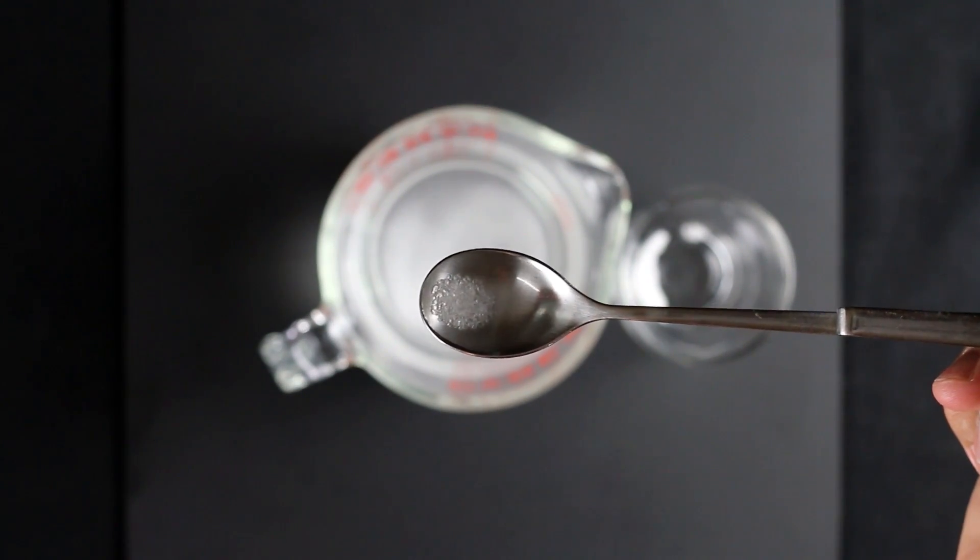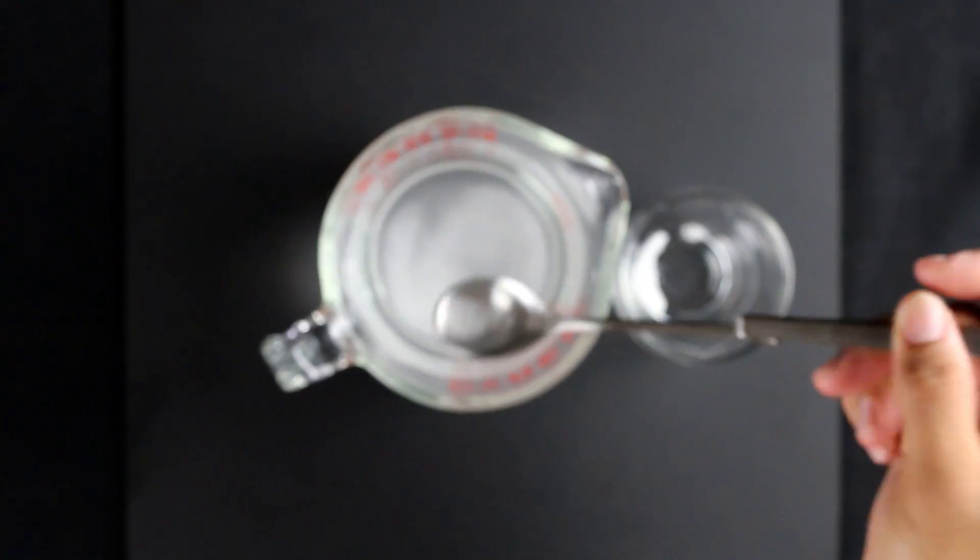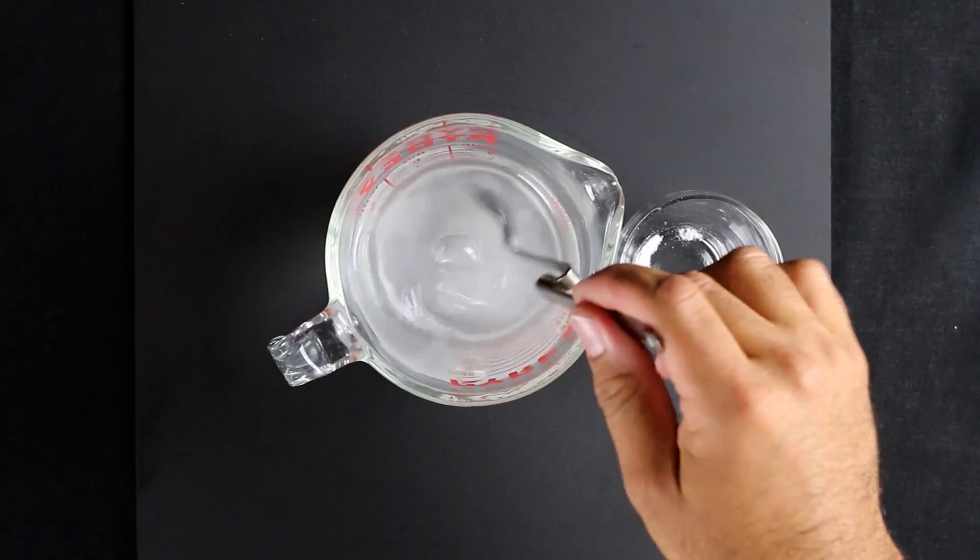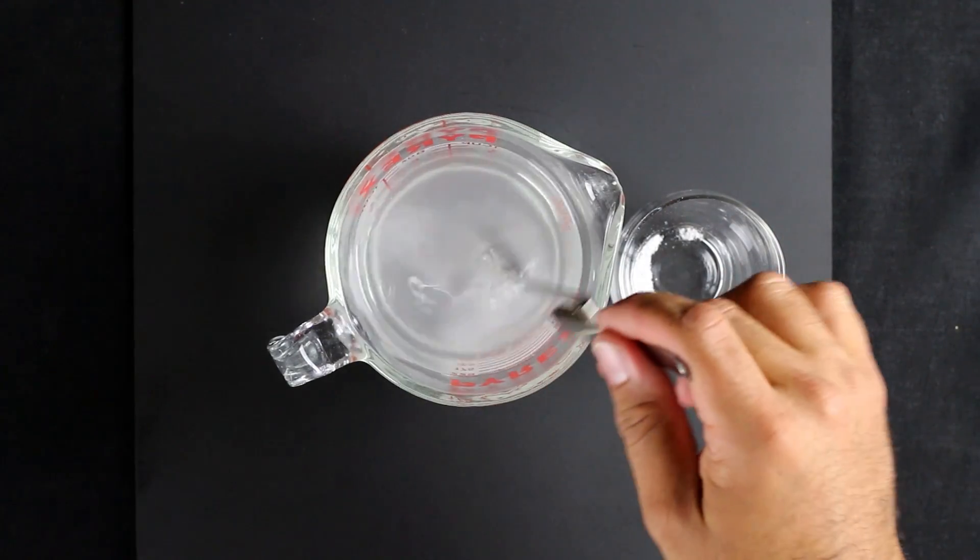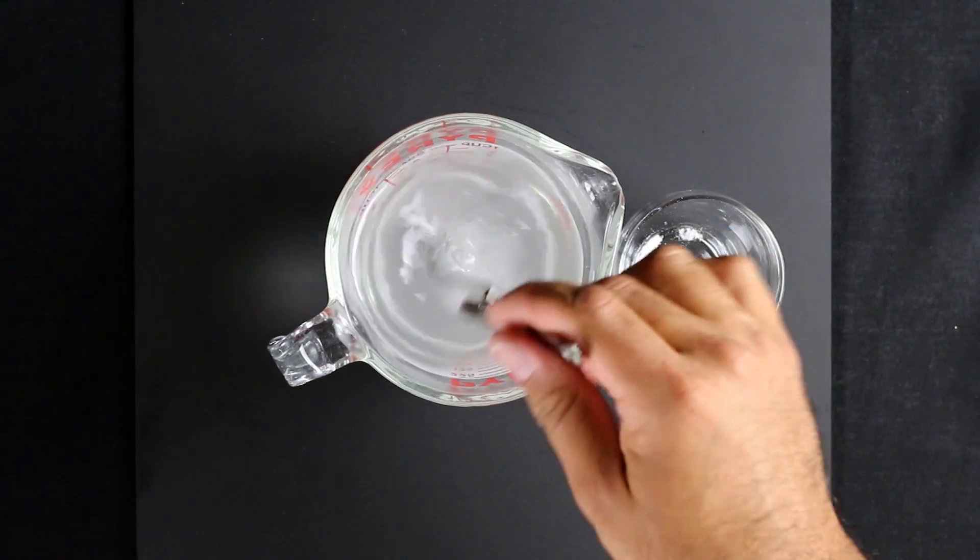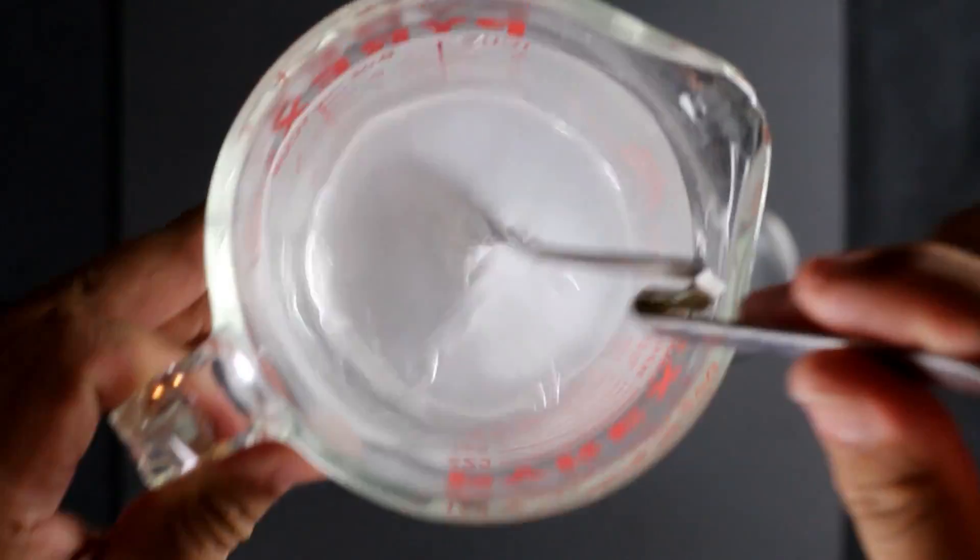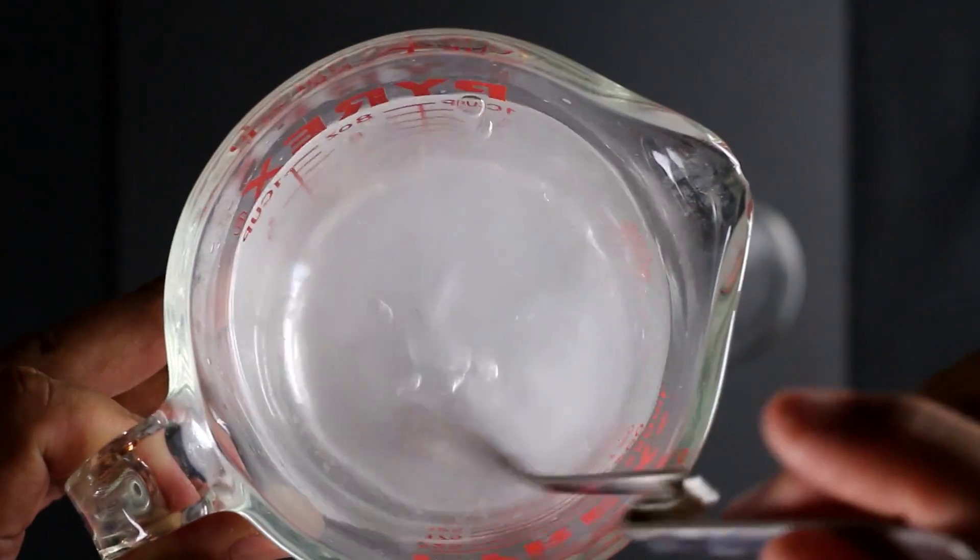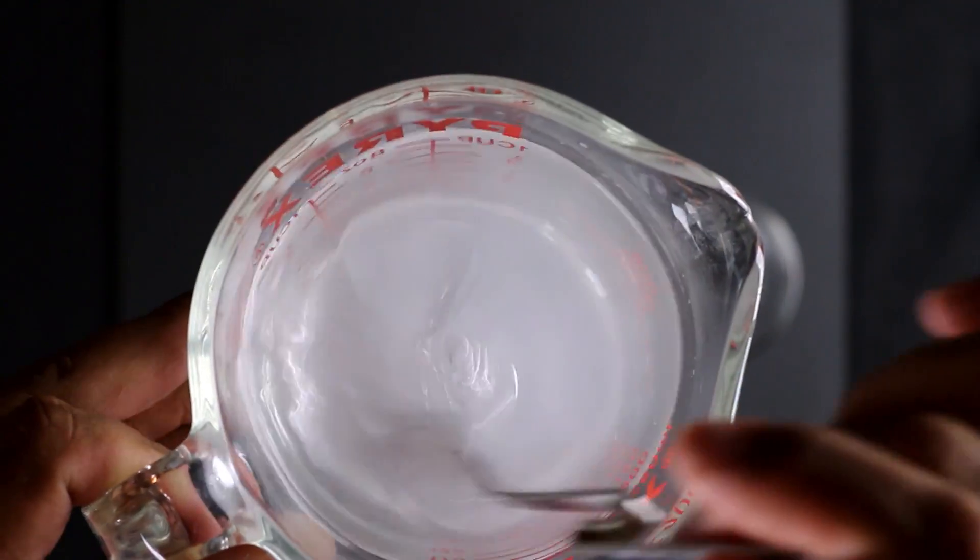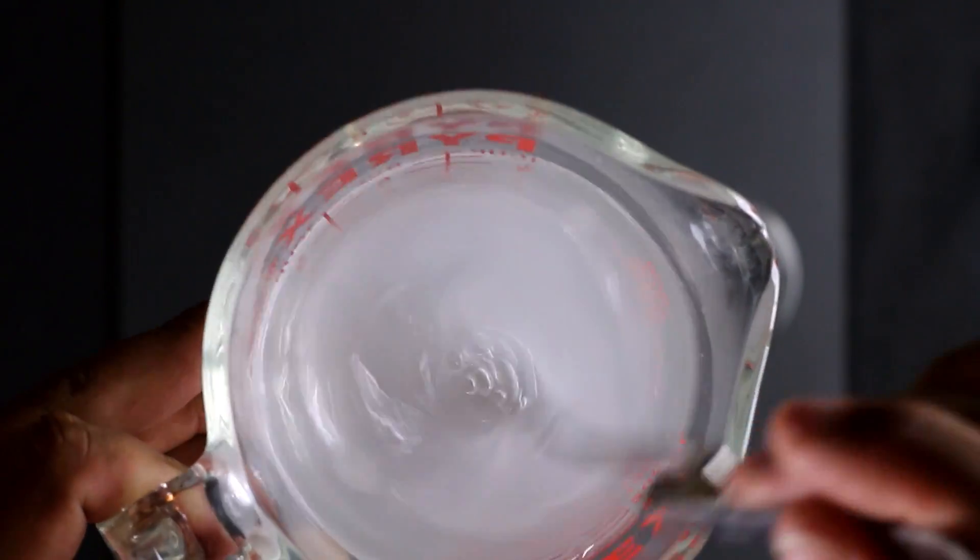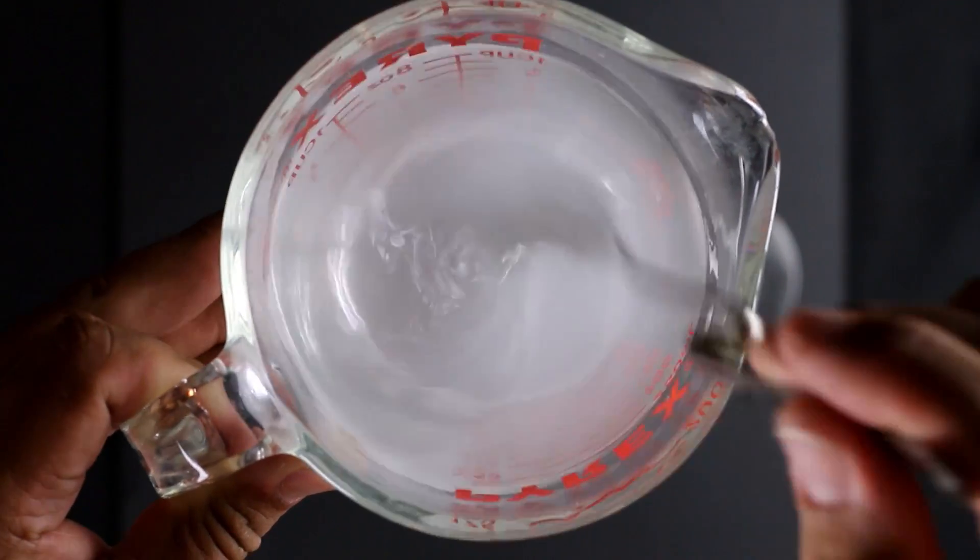See right now you have a bunch of salt crystals in that water. That's why I like using hot water because it's so much easier to dissolve. And you're going to spin this around and try to get all the salt crystals to really go away, which might take a while for you to reach that level.